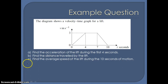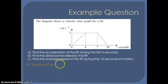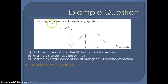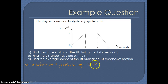We've been asked firstly to find the acceleration during the first four seconds. To calculate acceleration, we need the gradient of the line — that's the change in y over the change in x. Our change in y gives a value of 3, and our change in x gives a value of 4. So that's 3 over 4, or 0.75, and that acceleration is in metres per second squared.